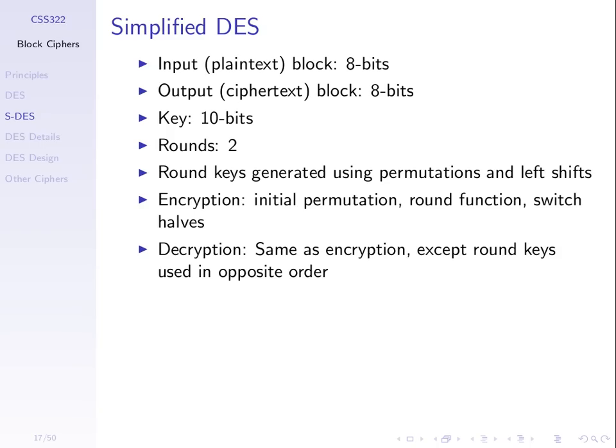In Simplified DES we deal with 8-bit blocks, operating similarly to DES. We look at 8 bits of plain text and produce 8 bits of cipher text. The key will be 10 bits. In real DES we have 16 rounds — we apply some function and repeat it 16 times. In Simplified DES, just 2 rounds to speed things up.